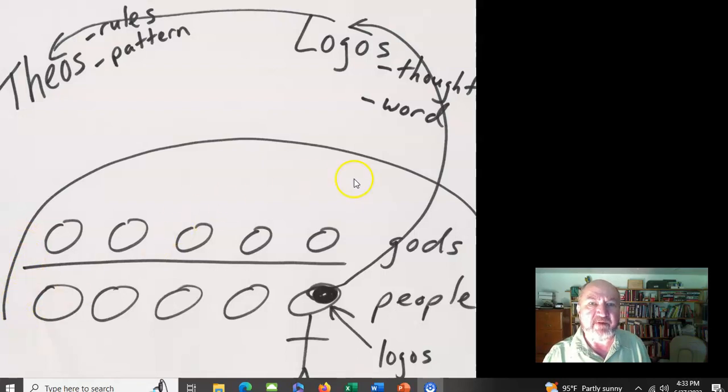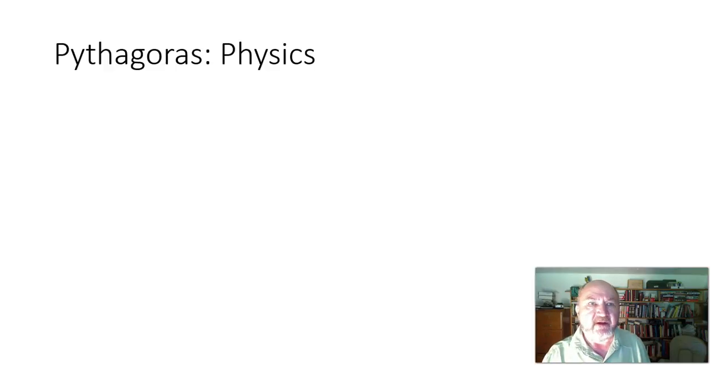This emphasis on numbers for Pythagoras leads us to another thing to note, just as with Thales, I said that we were talking primarily about a chemist, or all the materialists, are chemists thinking about what the physical universe is made of. If we wanted to find a modern science for Pythagoras, let's go with physics.